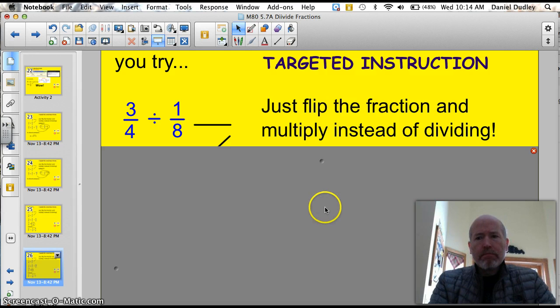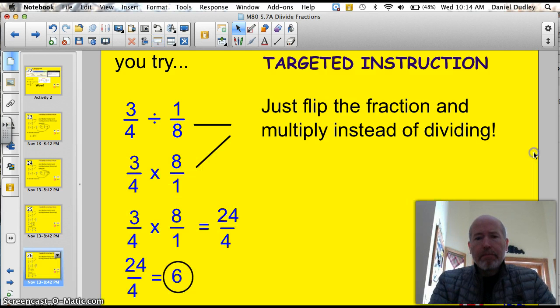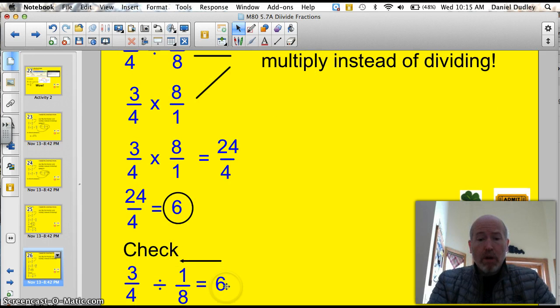Let's see how you did. 3 fourths times 8 over 1, right? Just flip it. So, 3 times 8 is 24. 4 times 1 is 4. So, we got 24 over 4, which, of course, 24 divided by 4 is 6. Let's put it in and see if it works. 6 times 1 eighth equals 3 fourths. Our check. Let's see. What's 6 times 1? 6 eighths. 6 eighths does equal 3 fourths. God, I love it when the plan comes together.